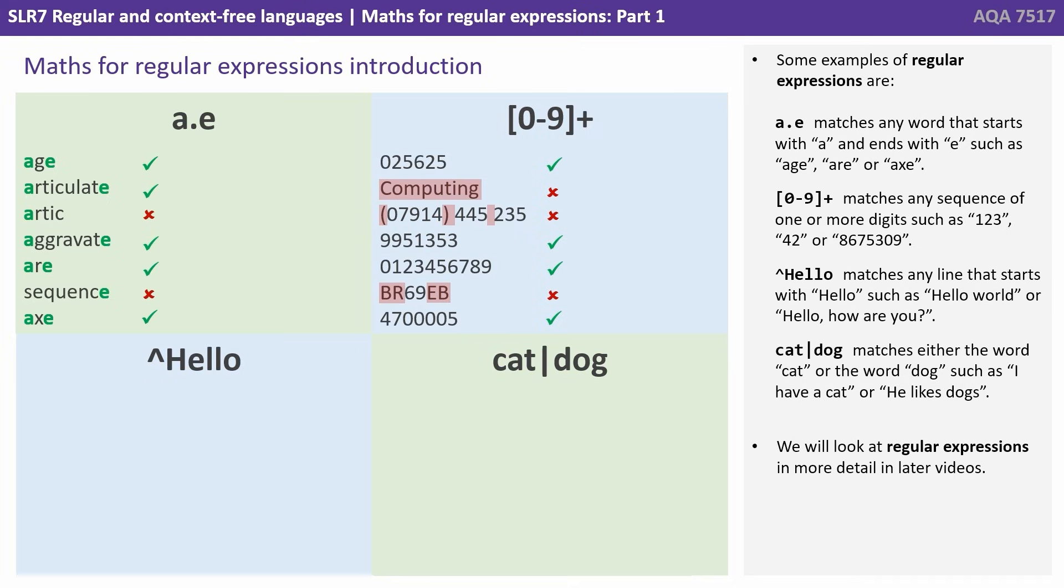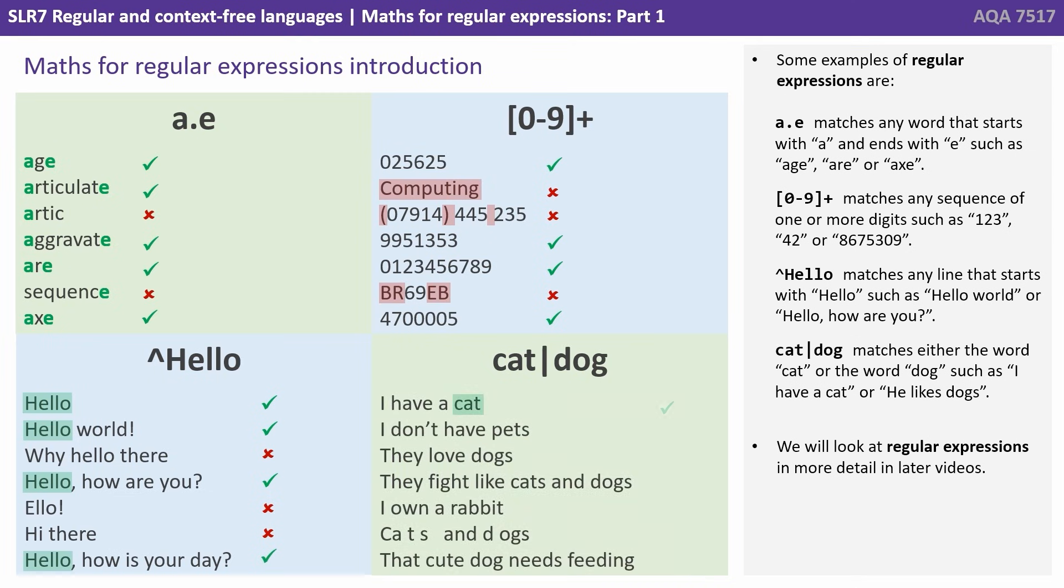The caret symbol, followed by the word hello, matches any line that starts with hello, such as hello world, or hello how are you. And cat, followed by the pipe symbol dog, matches either the word cat or the word dog, such as I have a cat or he likes dogs. We will look at regular expressions in more detail in a later video.